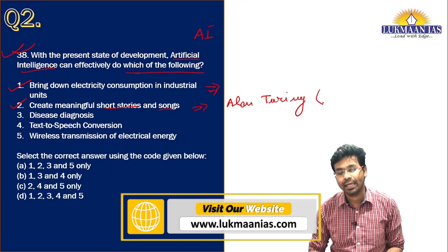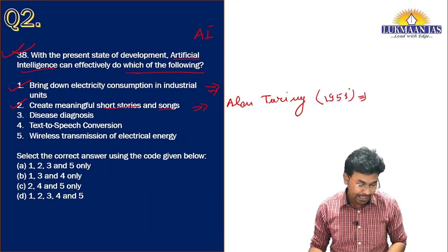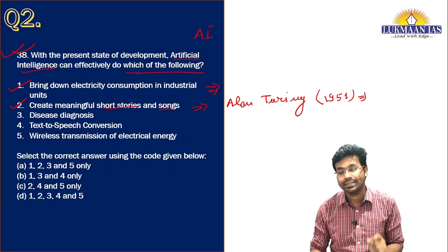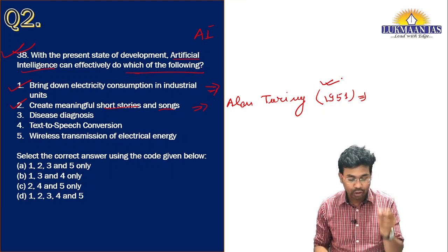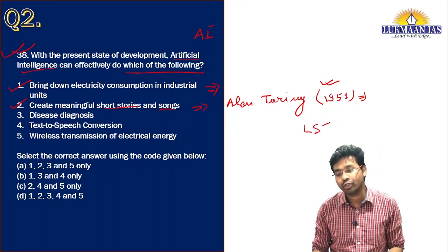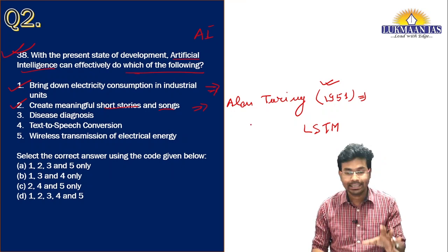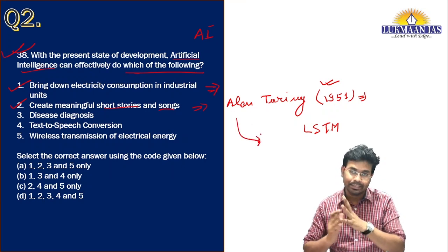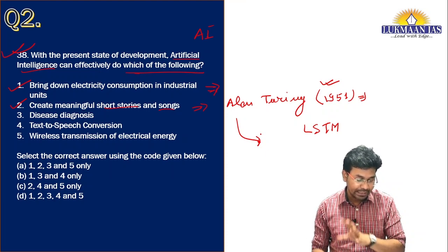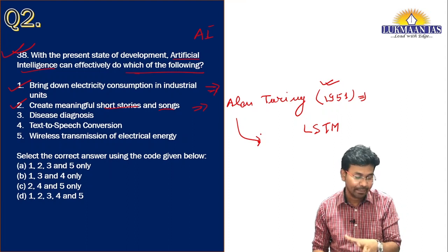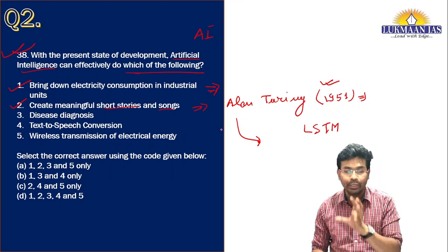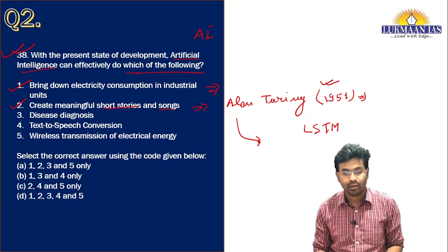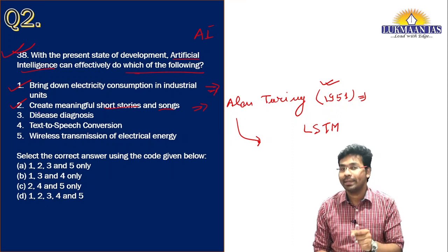Alan Turing developed a machine to generate simple melodies in the year 1951. He used the idea of long short-term memory for creation of this. He utilized speech data from movies like Interest Taylor and Fifth Element to create works known as Sunspring and It's No Game. So creating meaningful content is also an application of artificial intelligence.